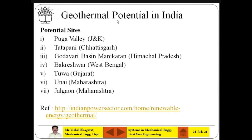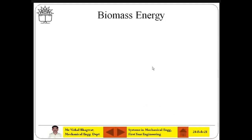Looking at potential geothermal sites in India: Puga Valley in Jammu and Kashmir, then Chhattisgarh, Godavari basin, Manikaran in Himachal Pradesh, Tuwa in Gujarat, West Bengal — the Bakreshwar one — and in Maharashtra, Unai and Jalgaon. We are not running any geothermal power plant right now, but we have identified these potential sites.